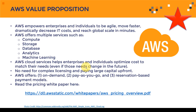So what is the AWS value proposition? AWS empowers enterprises and individuals to be more agile, move faster, dramatically decrease IT costs, and reach global scale in minutes. AWS offers multiple services including compute, storage, database, analytics, and machine learning, and helps enterprises and individuals optimize cost to match their needs.